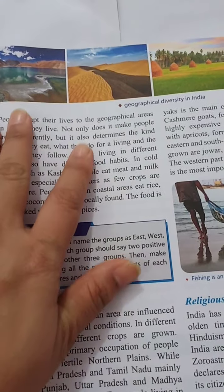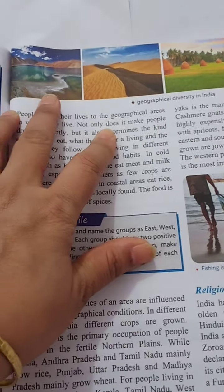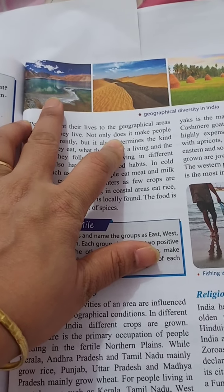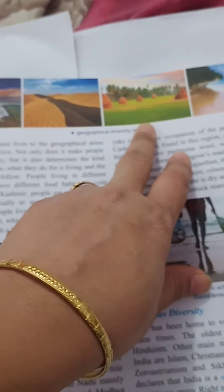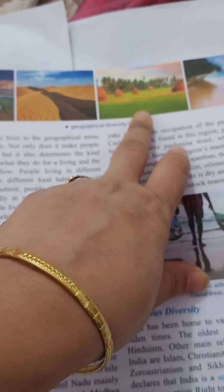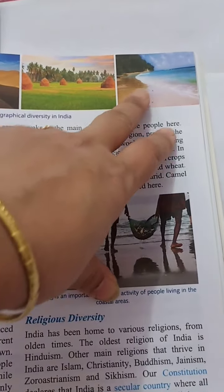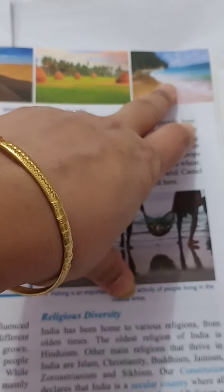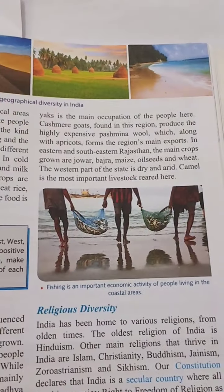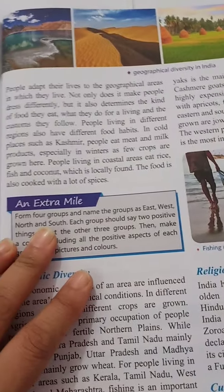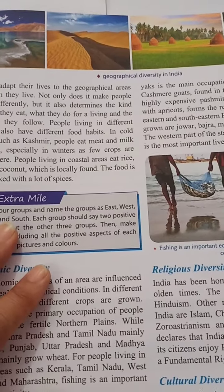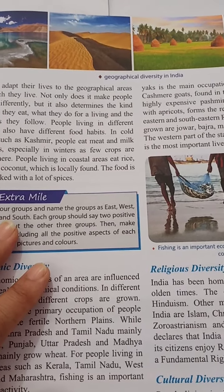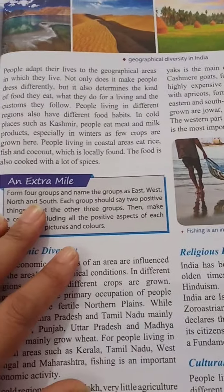Now see these pictures: a water body, a desert area, a fertile area, then the sea, and a coastal area. You can see all these types of landforms in India — this is geographical diversity in India.